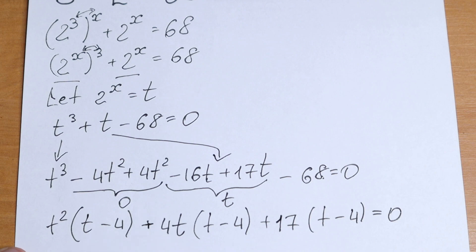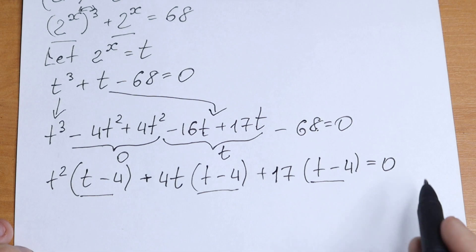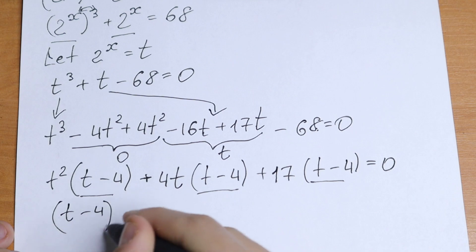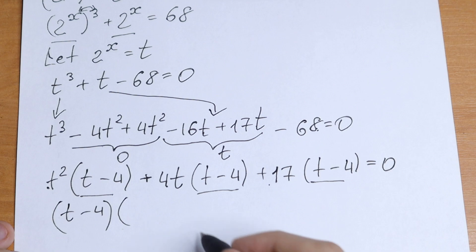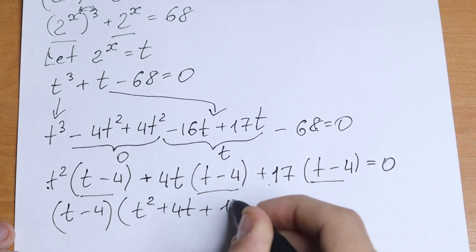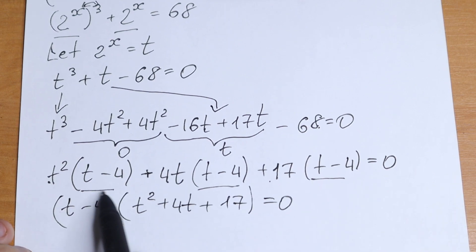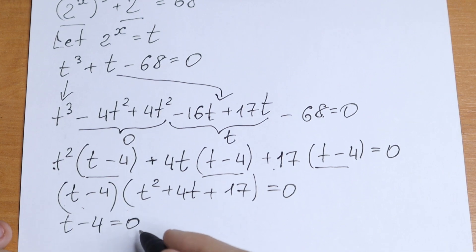Take a look — right now we have t minus 4, t minus 4, and t minus 4. So we can factor out t minus 4 from all of these elements. We will have t minus 4, and in parentheses we will have t squared plus 4t plus 17, equal to 0. We have a product equal to 0, so t minus 4 equal to 0, giving us t equal to 4.